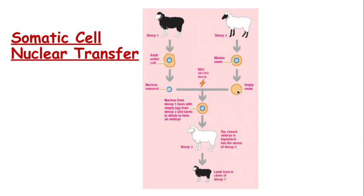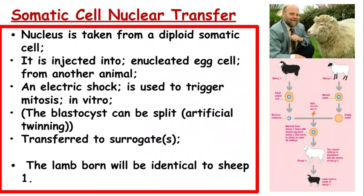The nucleus is placed into the enucleated egg and a mild electric shock is provided to invoke and promote mitosis. This causes cell division within the egg, forming a totipotent blastocyst, which is then implanted into a surrogate mother. The surrogate normally has no genetic relation to the offspring. It's important to note that the empty ovum still contains mitochondria, so the offspring will contain mitochondrial DNA from the egg donor, but will otherwise be a genetic clone of the original individual.